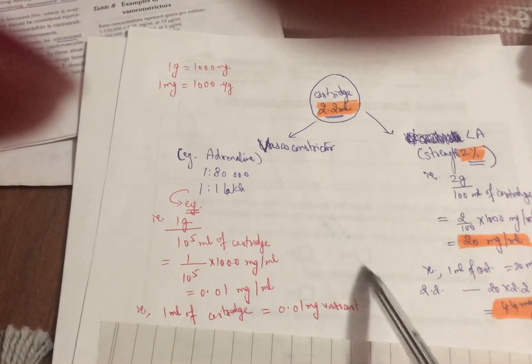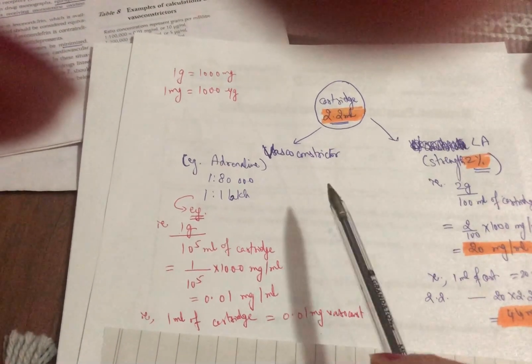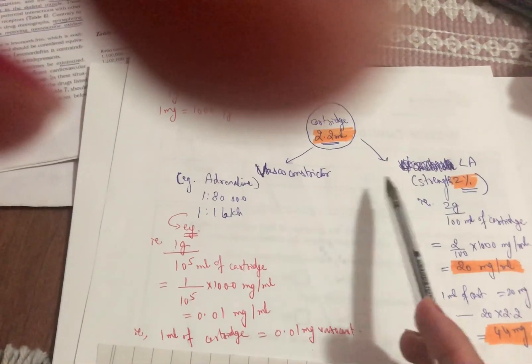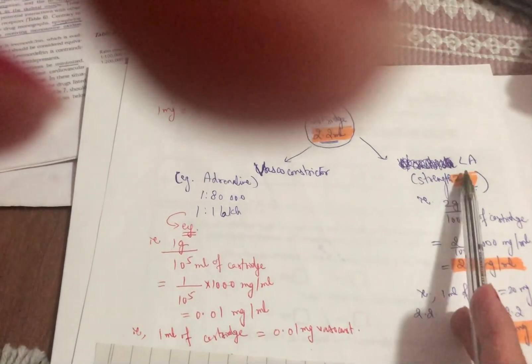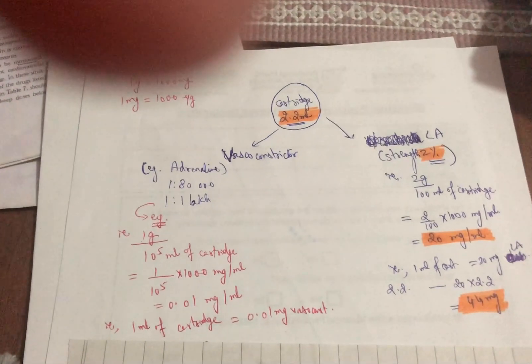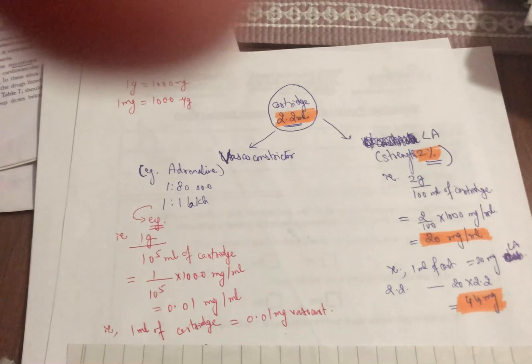So same way you can find the amount of vasoconstrictor just like you have found the amount of the LA. Now in the next video I'm going to do the maximum dosage because that's also an important calculation that we normally find in the exams.